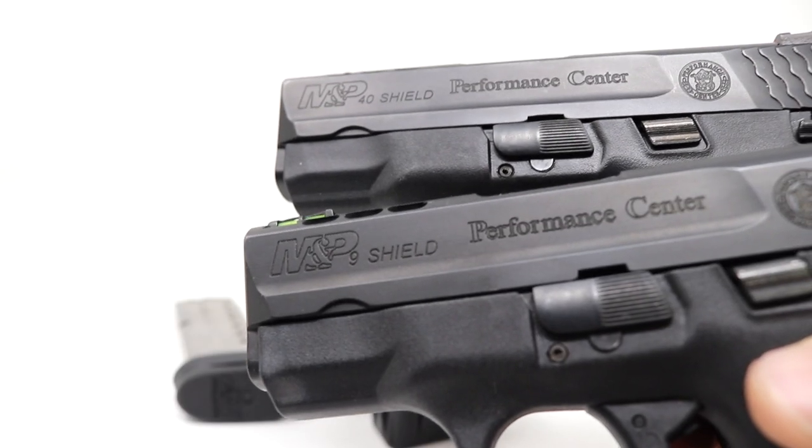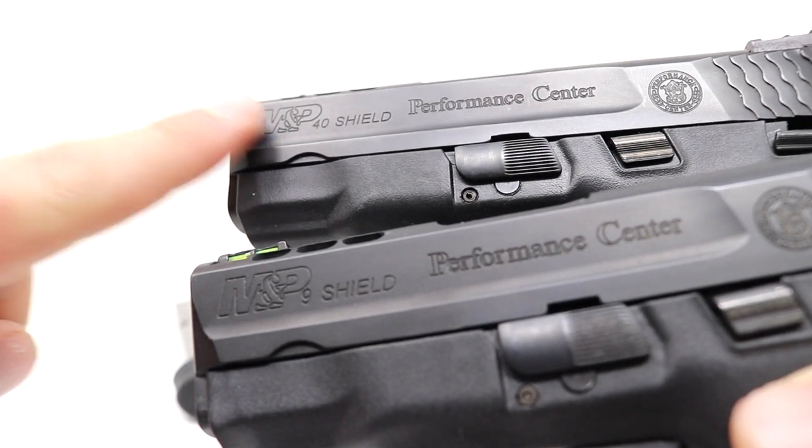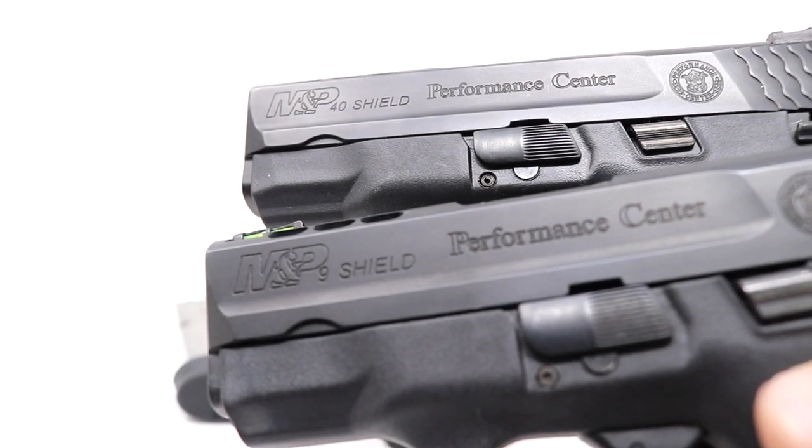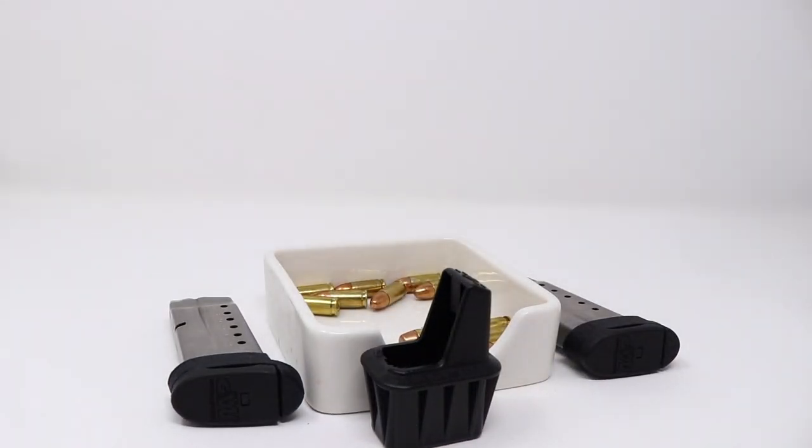If you own a Smith & Wesson M&P Shield or Shield 2.0 in 9 or 40 cal, and again check the markings before you get started here, we have a fantastic custom speed loader from Makershot.